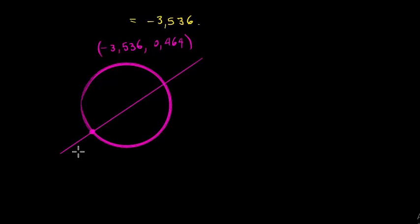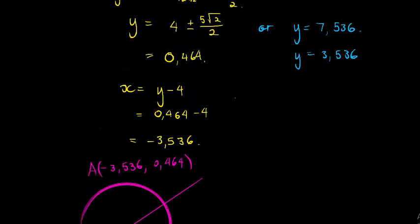That's this point here. Let's call that point A. Then we've got another coordinate here. This one should be x = 3.536 and y = 7.536. We'll call that coordinate B.